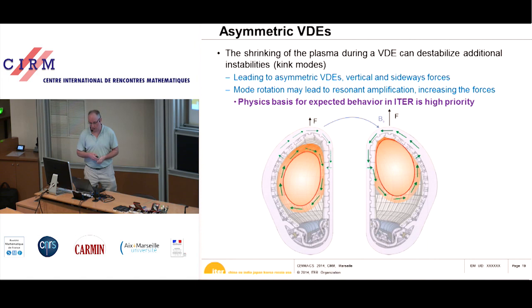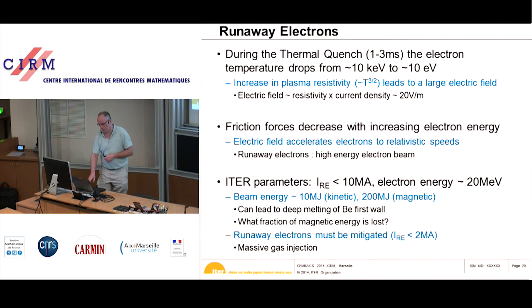This is a relatively new observation in tokamak plasmas, and the physics basis — when it is expected to occur — is not very well known, making it one of the highest priorities for ITER research at the moment.